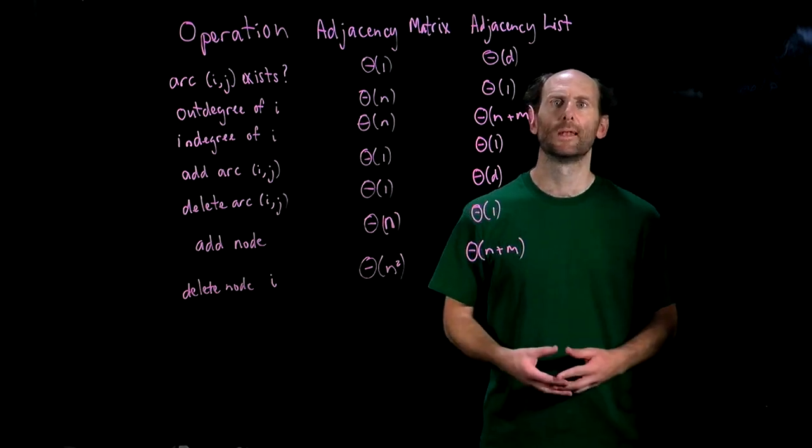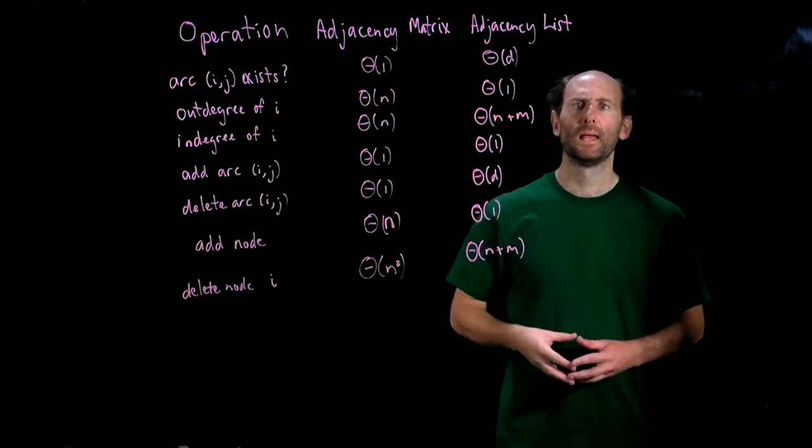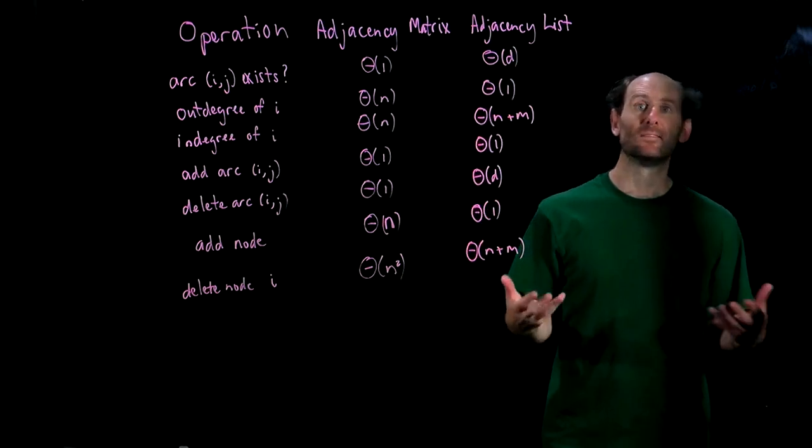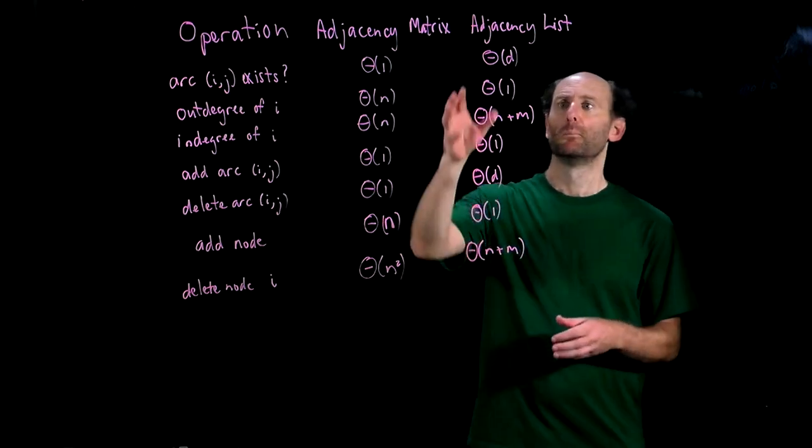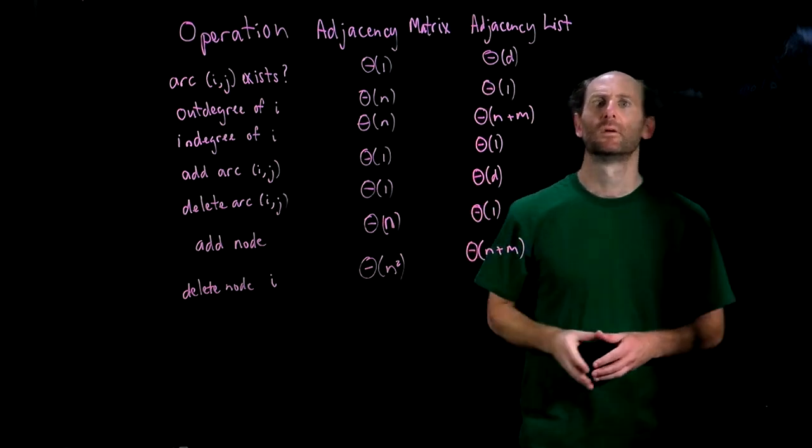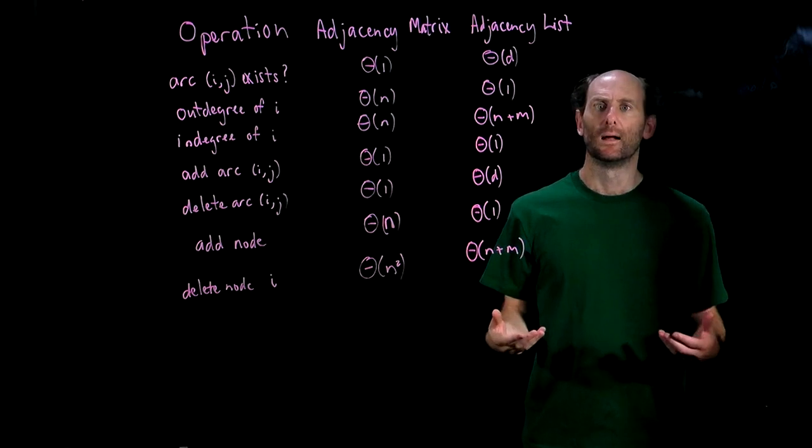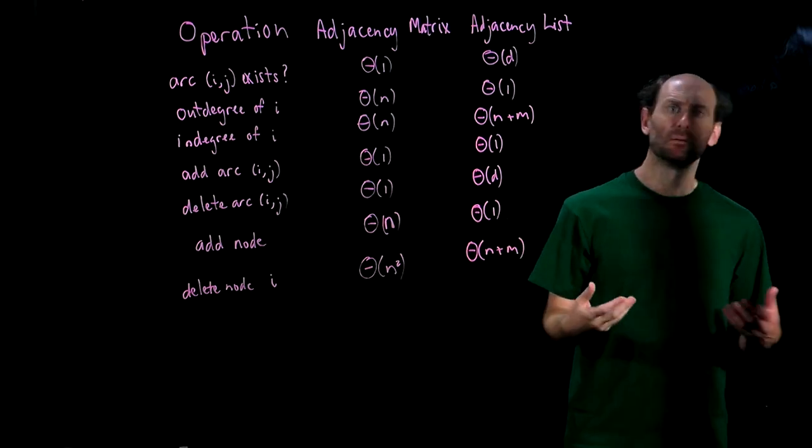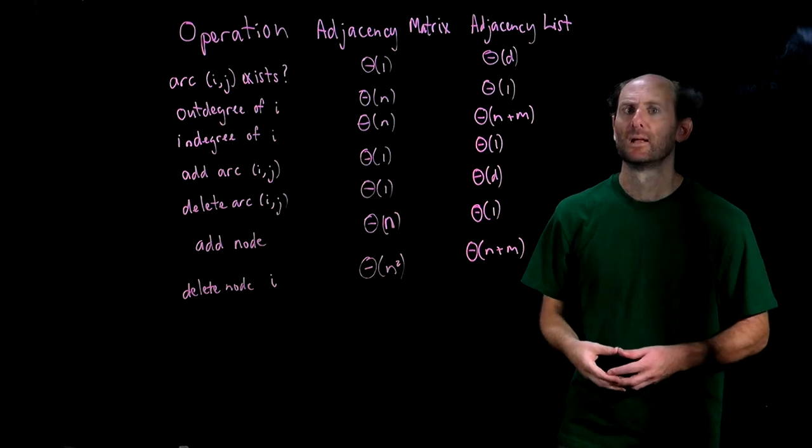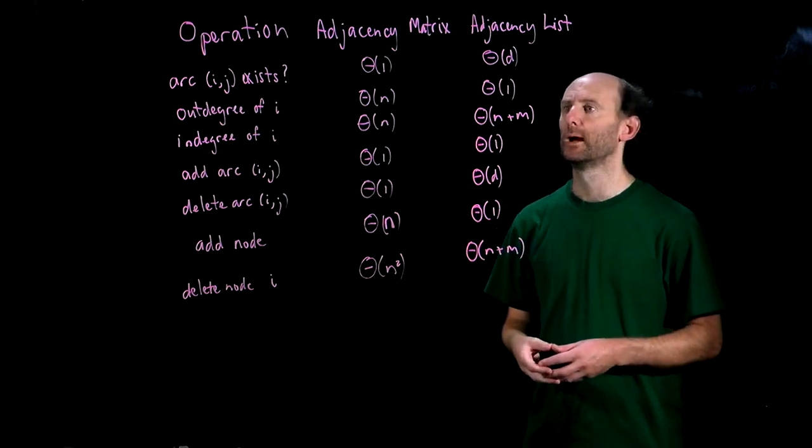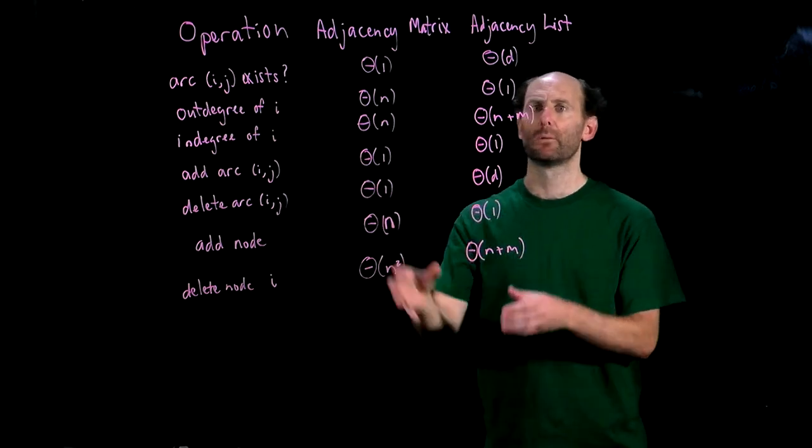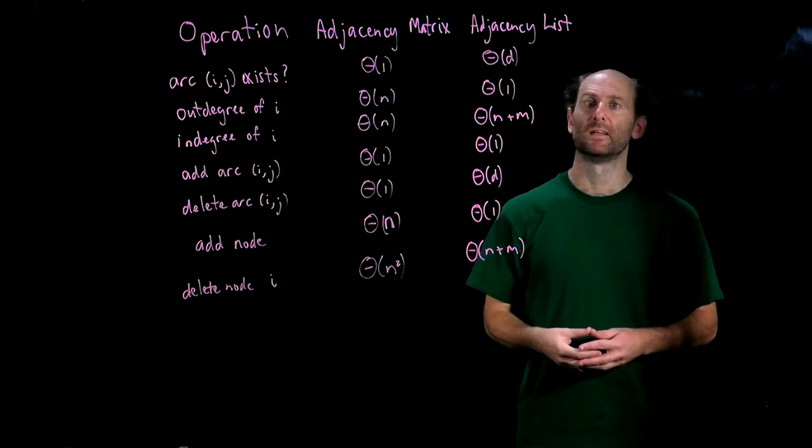In general then adjacency lists are more dependent on the sparsity or density of the graph. So they'll be more time efficient when we're dealing with a sparse graph. But when we're getting towards a dense graph lists are more comparable or even slower than the adjacency matrix setup.